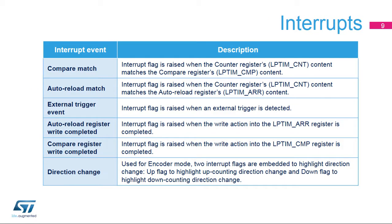The low-power timer peripheral features six interrupt sources. The compare-match interrupt is raised once the content of counter register LP-TIM-CNT matches or is greater than the compare register LP-TIM-CMP content. The auto-reload match interrupt is raised when the counter register's content matches the auto-reload register's content. The external trigger event interrupt is raised when a valid external trigger is detected. The auto-reload register write completed and compare register write completed interrupts are raised when the transfer of content from LP-TIM-ARR and LP-TIM-CMP is completed from the peripheral's APB interface logic into the peripheral's core logic, which are contained in two different clock domains.